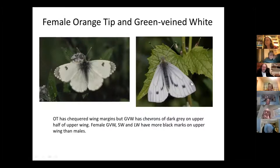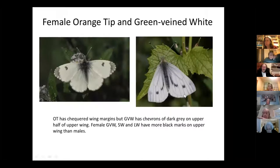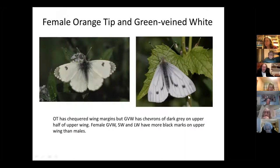Looking at the green veined white more closely: it has a smudge like the small white but also lots of little chevrons or triangles coming in along the veins, usually including the vein below the cell spot. In the small white this grey smudge never comes down to the vein joining the cell spot; in the large white the black comes all the way past this vein; and in the green veined white there are triangles coming in along the veins down to and just past the cell spot. So it's the wing edge that helps you identify these species.